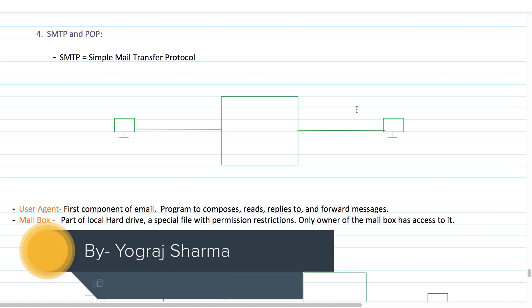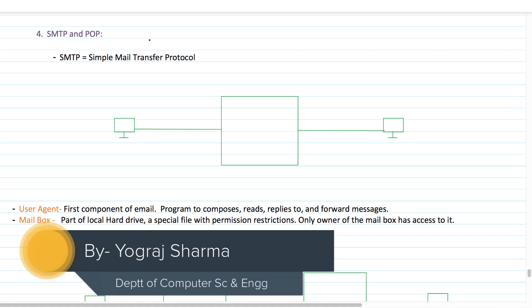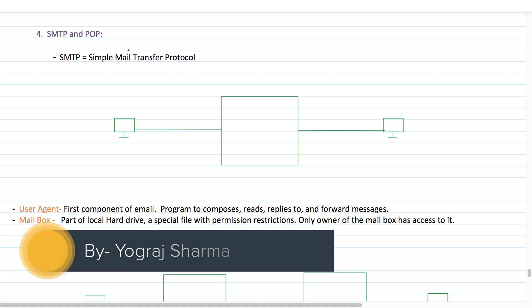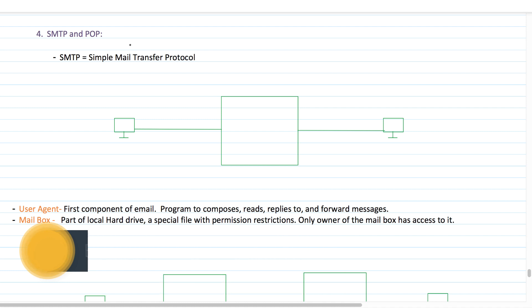Hello and welcome in this video lecture series. Today we are going to continue our discussion on application layer protocols. Let's resume our discussion from SMTP and POP. SMTP basically stands for Simple Mail Transfer Protocol. From this word 'mail' you can understand that emails are transferred using SMTP.